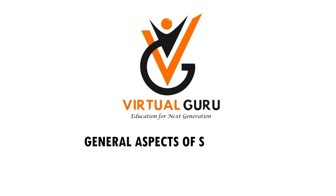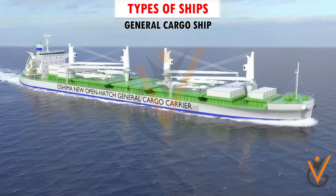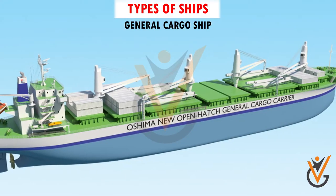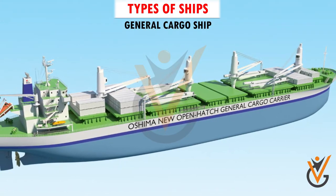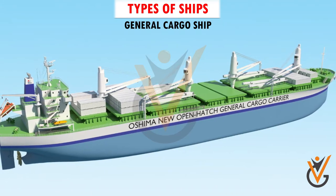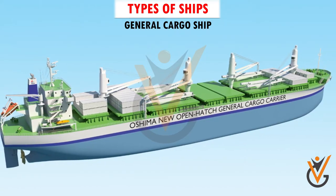General aspects of shipping and types of ships. A general cargo ship is used for carrying different types of dry cargo in different sizes and shapes. This type is the earliest of cargo ships. The first change was in the sizes of ships, then in the method of packaging cargo.